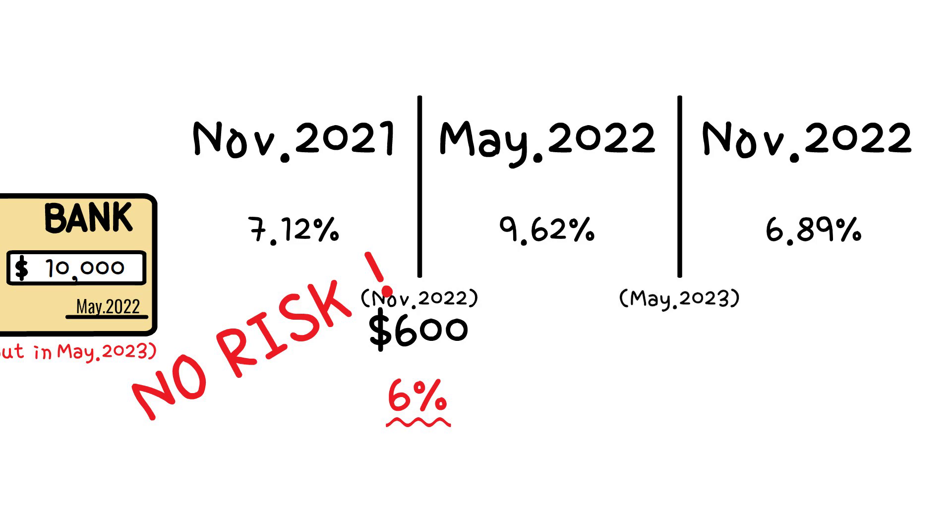The interest rate on I bonds announced in May 2022 was 9.62%, and it was 6.89% in November 2022. When you cash out, you will receive 9 months interest in principal, excluding interest for the months of February, March, and April. The interest is about $650. It generates a higher profit than scenario 2.